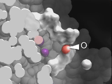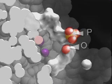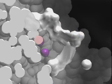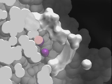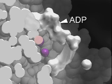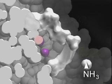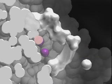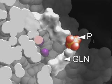A side-chain oxygen from glutamate attacks the gamma-phosphate of ATP, forming a penta-coordinate phosphorus, which collapses to produce ADP and glutamyl phosphate. Ammonia attacks the activated glutamyl carbon, producing a tetrahedral intermediate, which collapses to form glutamine and inorganic phosphate.